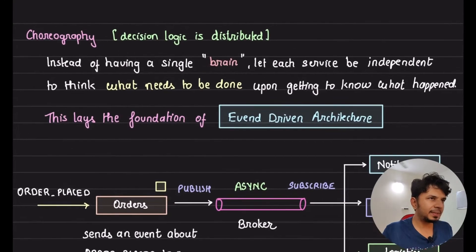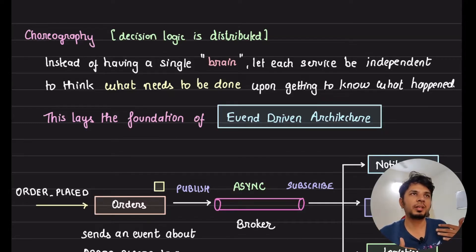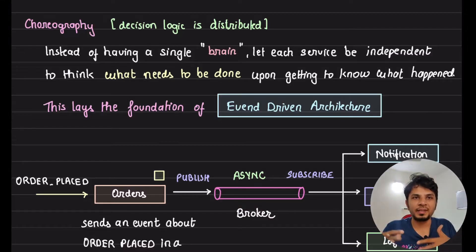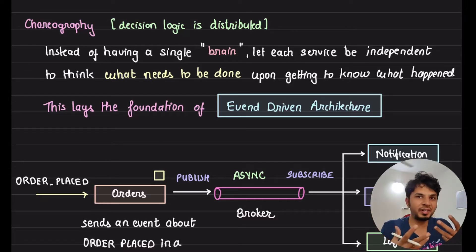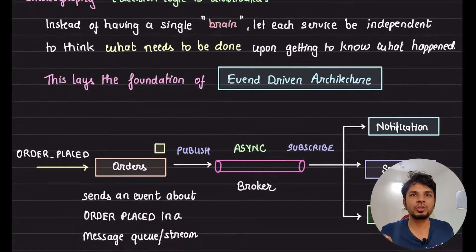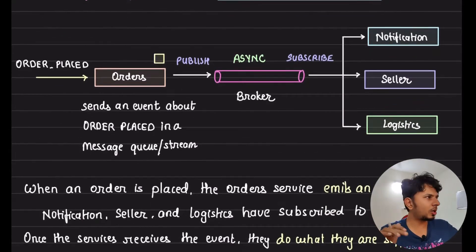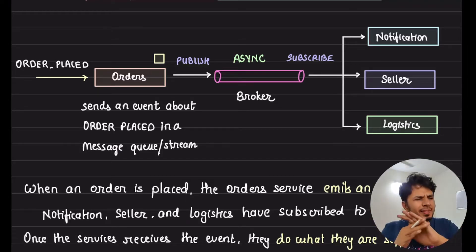The second pattern is choreography, which is basically the converse of orchestration. Instead of centralized logic, the decision logic is distributed — every single service has its own brain. The core concept of choreography is to make it event-driven, and this laid the foundation for event-driven architectures. Whenever the order service accepts an order, it publishes a message into a message broker. This event is subscribed by all the involved services — notification, seller, and logistic.